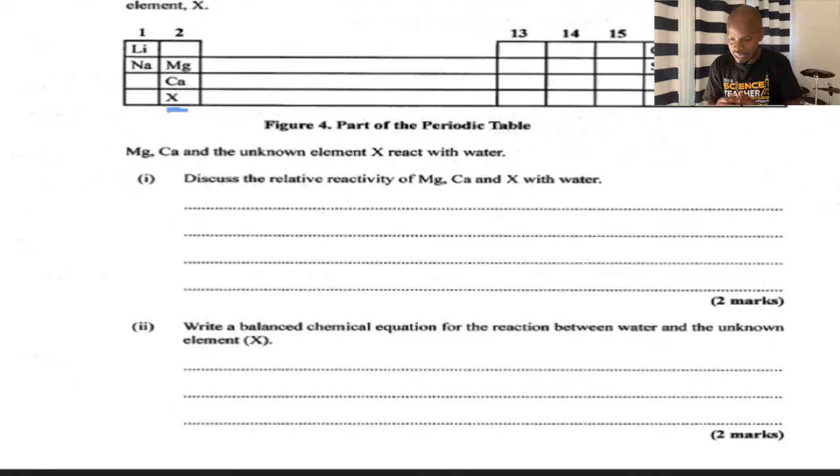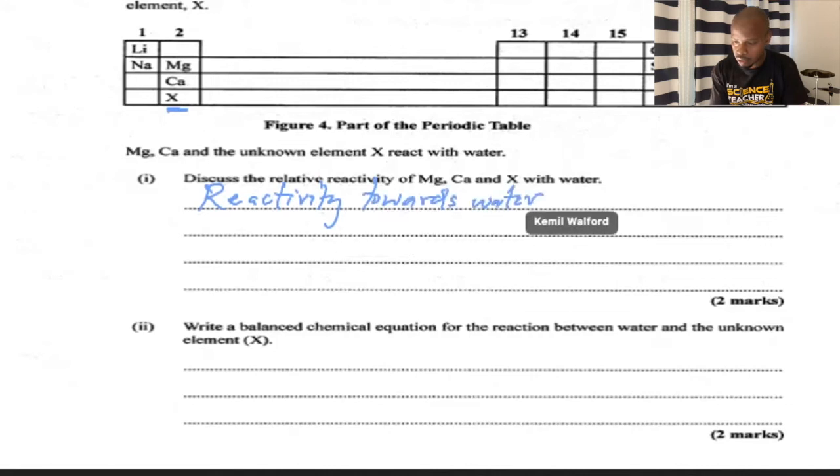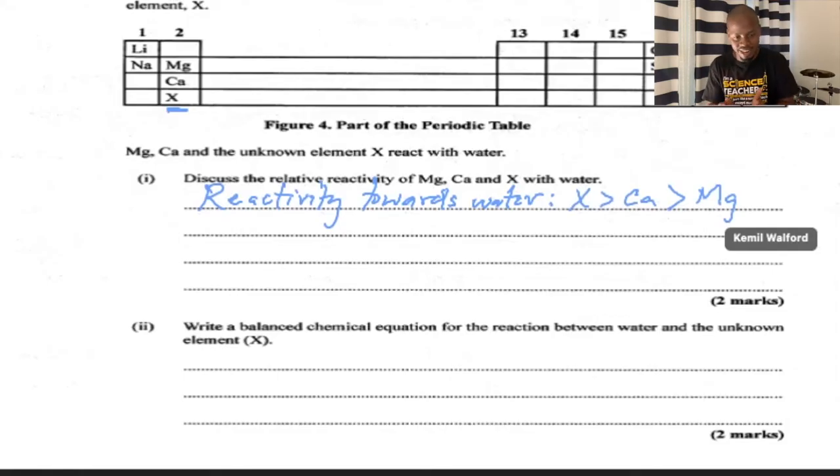They want us to discuss the relative reactivity of magnesium, calcium and X with water. We just want to be clean and simple. We don't need to write to fill up all the lines, just communicate effectively. Reactivity increases down the group, so X is the most reactive. We write: reactivity of X is greater than calcium, which is greater than magnesium. There we've written a reactivity series for these three elements towards water. Two marks.